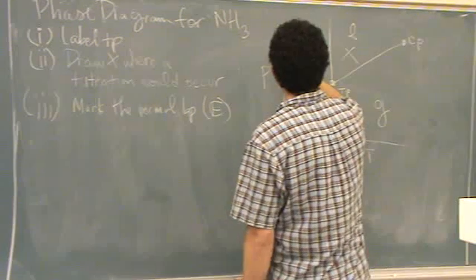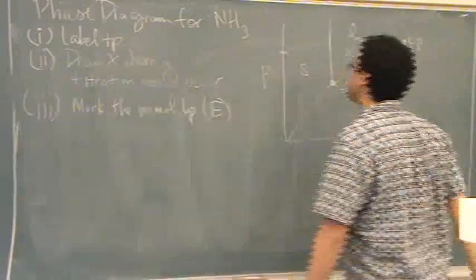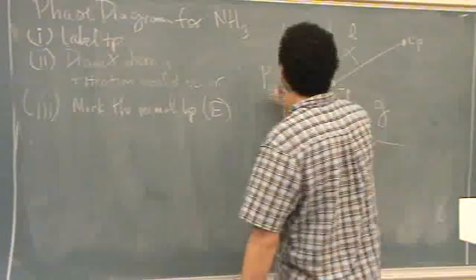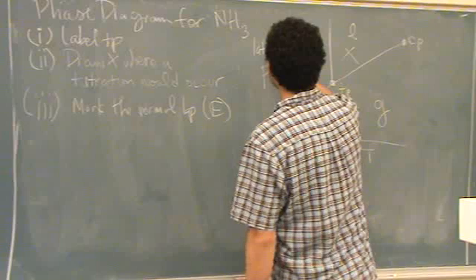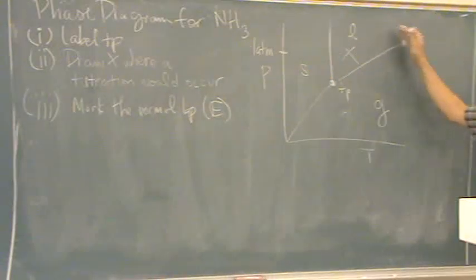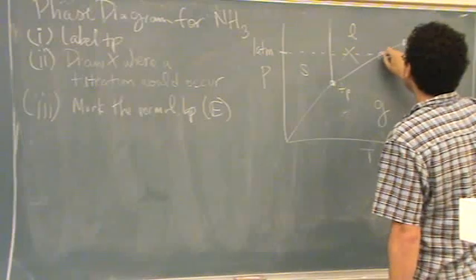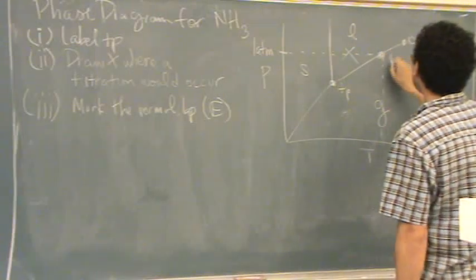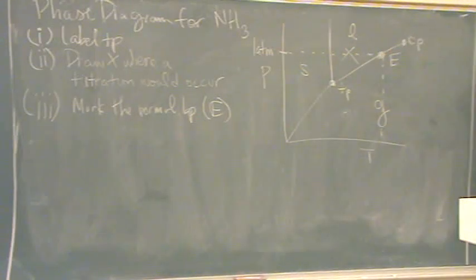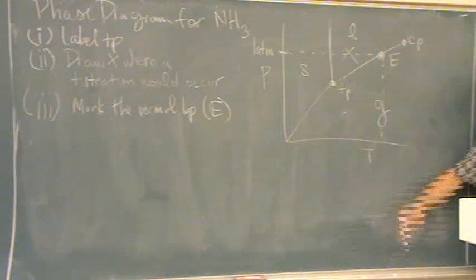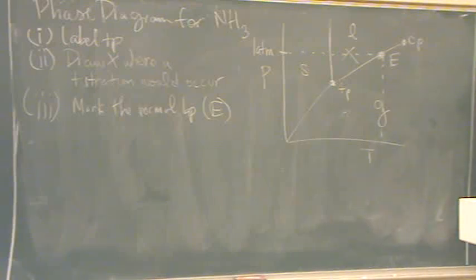So, what pressure does the normal boiling point have? One. One atmosphere. So you just pick a random spot somewhere that's going to intersect with this line. And better put an E right there. And that will happen at one atmosphere, wherever that is. It has to be above the triple point and below the critical point. Okay, that's part III.